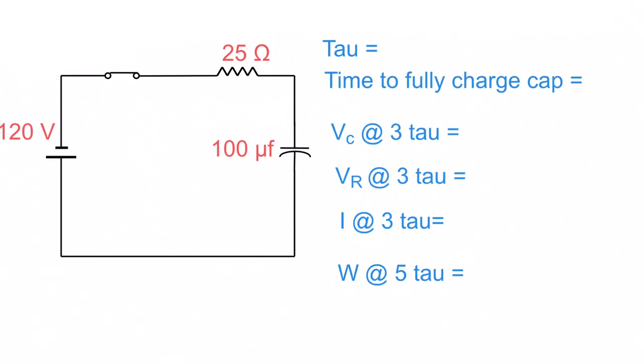So here we go. Our first item on the list here, tau. So to get the tau, all we have to do is go 100 microfarads, so you're going to put that as 100 times 10 to the negative 6. And you're going to multiply that by 25. And then you're going to get 2.5 milliseconds, which is perfect.